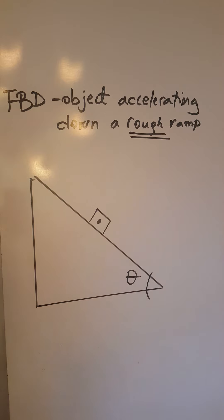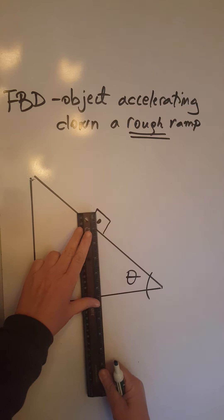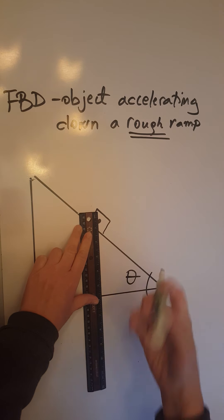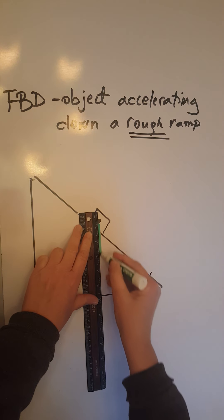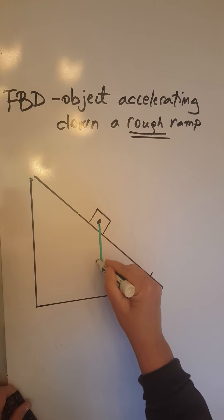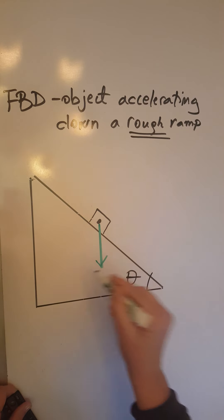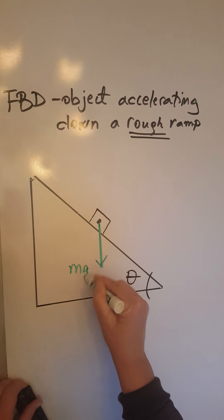The first force that we are going to draw on the free body diagram is the force of gravity. The force of gravity always acts vertically downwards, starting from the center of gravity of the object. Label it mg.